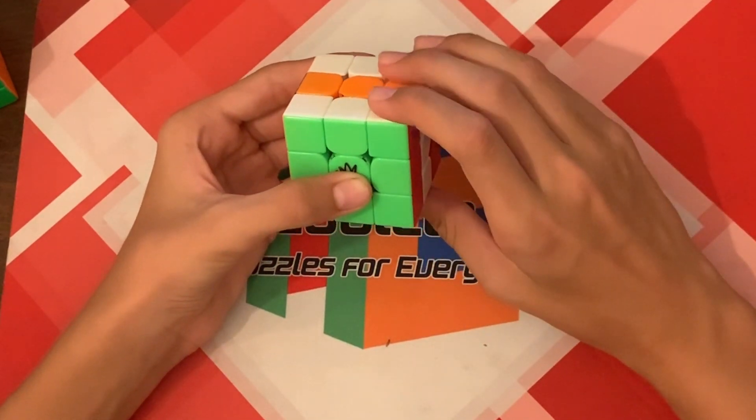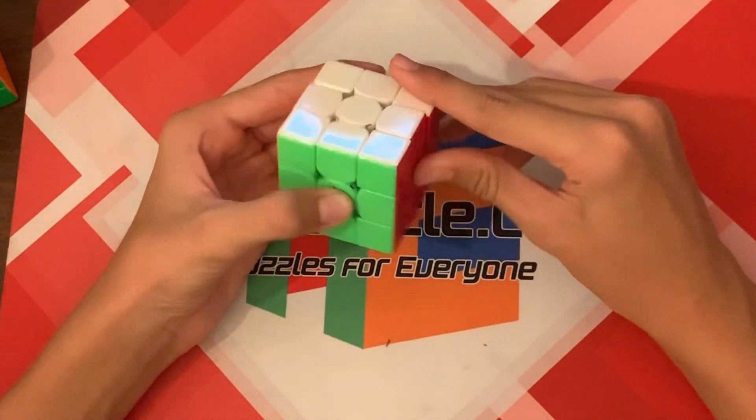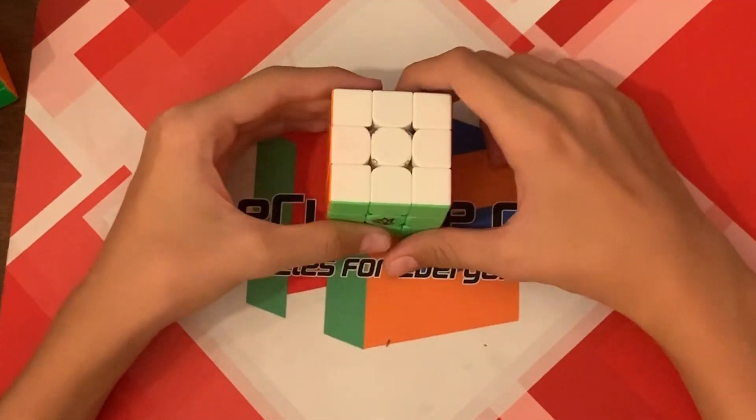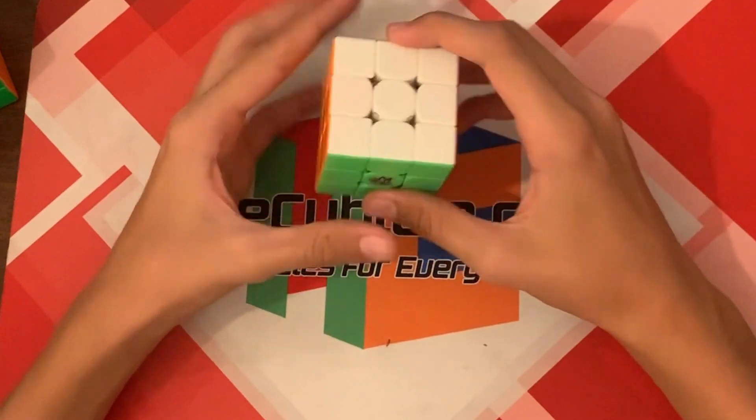And then F, wide F prime. Like that. Okay. And the next move is called S.